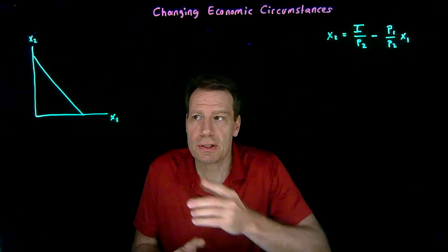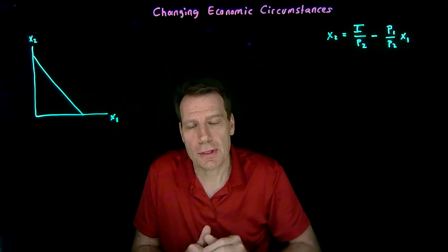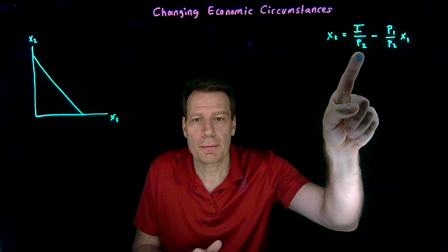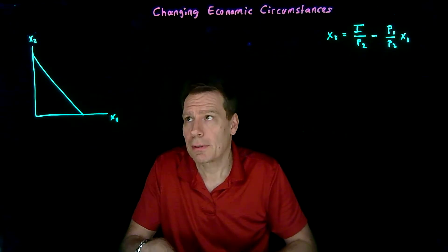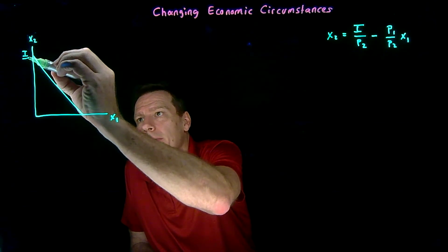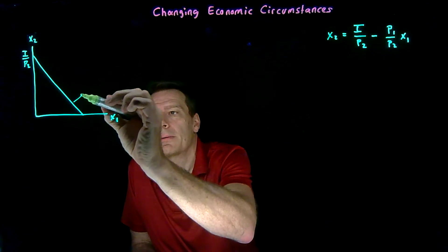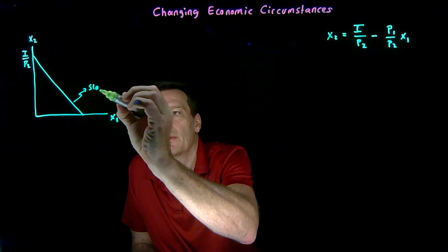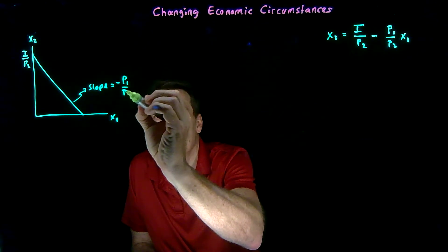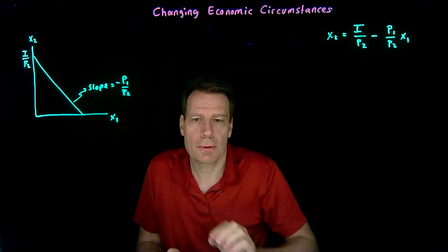We've now derived the idea of a budget line and the budget equation and related those to each other. In the budget equation, we have an intercept term and a slope term. The intercept is the y-intercept, and the slope is minus p1 over p2, which is the opportunity cost of good 1 in terms of good 2.